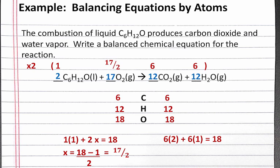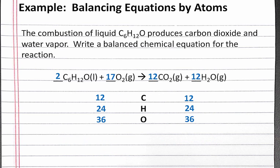We can double check to make sure we have the same number of elements on both sides. And we'll now have 12 carbons on both sides, 24 hydrogens, and 36 oxygens. So our balanced chemical equation is 2 C6H12O liquid plus 17 O2 gas produces 12 CO2 gas plus 12 H2O gas.